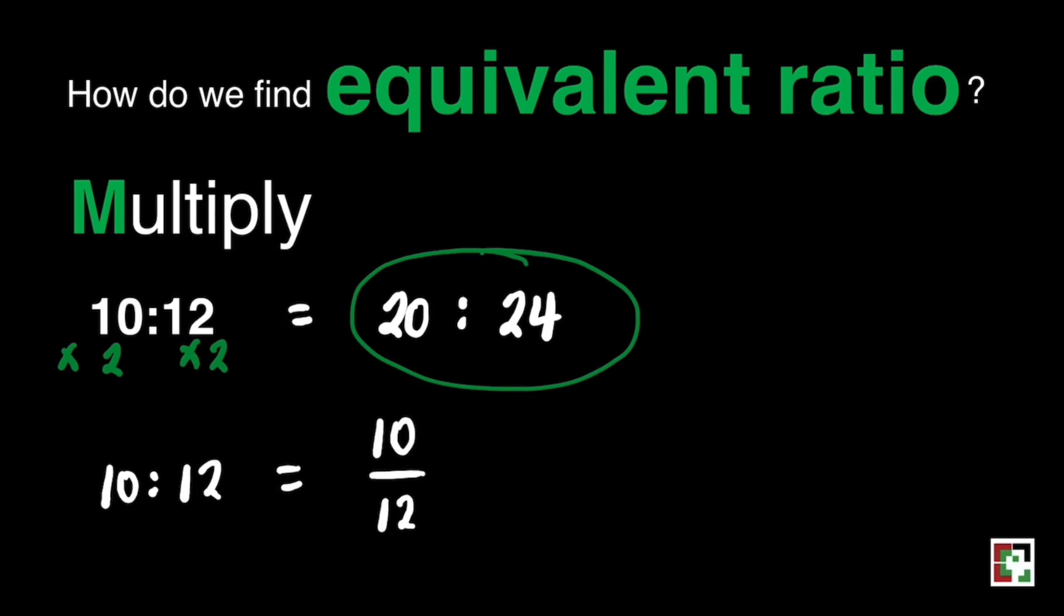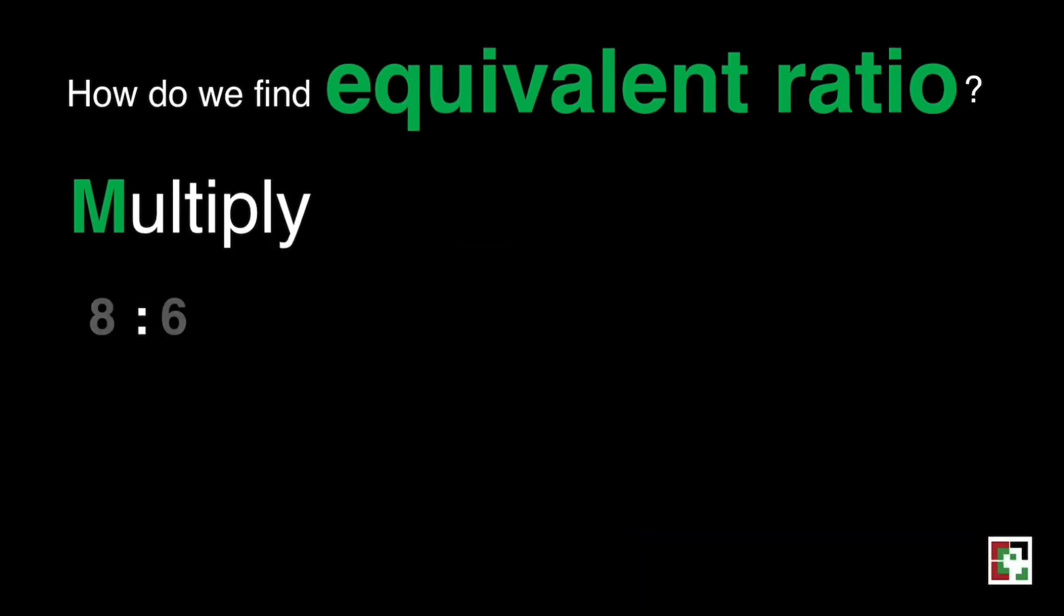That's 10 over 12 times 2 over 2, which is our fancy fraction which is equivalent to 1. That will give you 10 times 2 is equal to 20, and 12 times 2 is equal to 24. It's easy, right? Let's have another one.